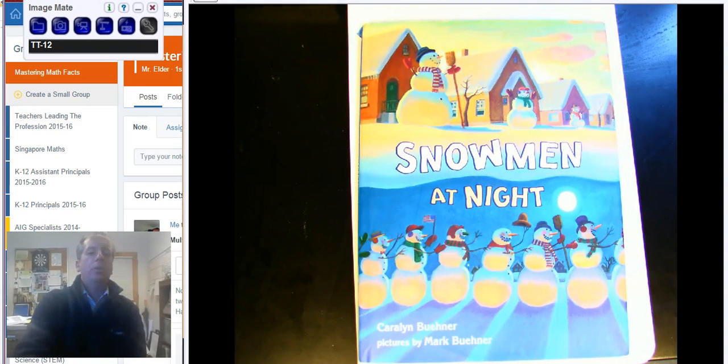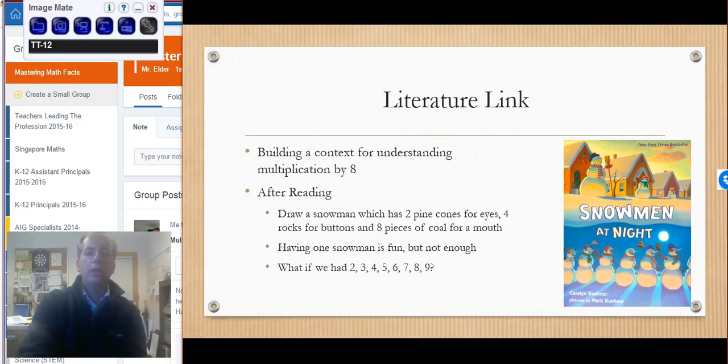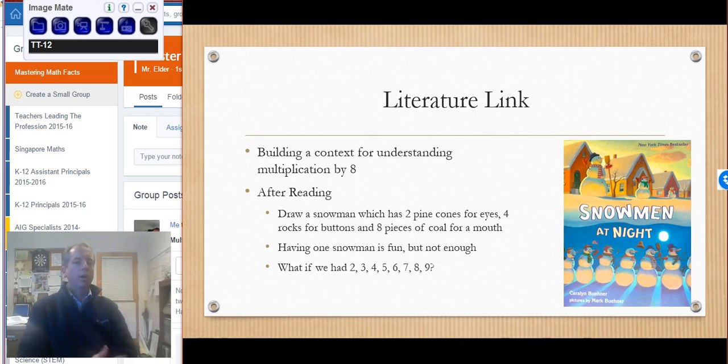So let's look at how we can pull that as an interesting piece of literature, a fun piece of literature in, to bring in our math facts. Once we get to our after reading part, as the teacher I'm going to draw a snowman, and I'm going to make sure that I control some of the numbers on this one. I'm going to say, let's do two pine cones for the eyes, four rocks for the buttons on his shirt, and eight pieces of coal for his mouth. And so with the kids, we're building this, we're drawing it out, we're getting the interest there.